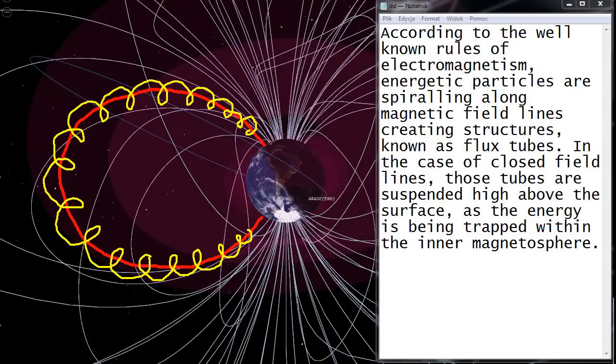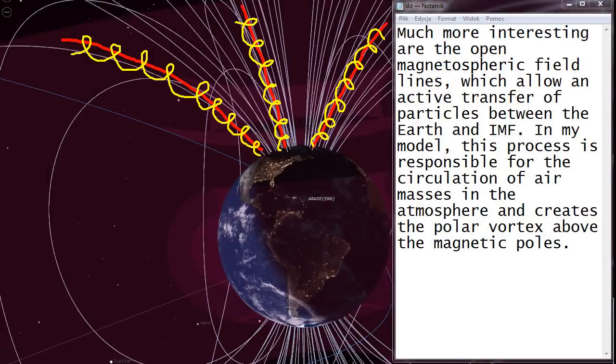According to the well-known rules of electromagnetism, energetic particles are spiraling along magnetic field lines creating structures known as flux tubes. In the case of closed field lines, those tubes are suspended high above the surface and the energy is being trapped within the inner magnetosphere. Much more interesting are the open magnetospheric field lines, which allow an active transfer of particles between the Earth and IMF. In my model, this process is responsible for the circulation of air masses in the atmosphere and creates the polar vortex above the magnetic poles.